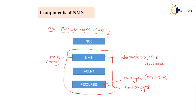The second component is the agent. An agent cannot create data, but it can forward data. The agent requires data from the manager or service provider, and once it receives data from NMS, it is able to make communication with resources — meaning making connections and exchanging information, which together constitute the establishment of communication. But agents cannot create the data.